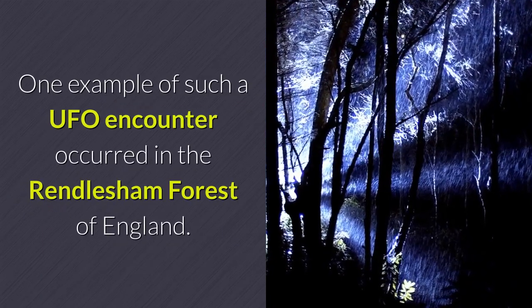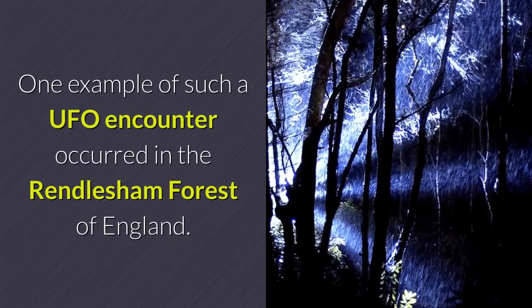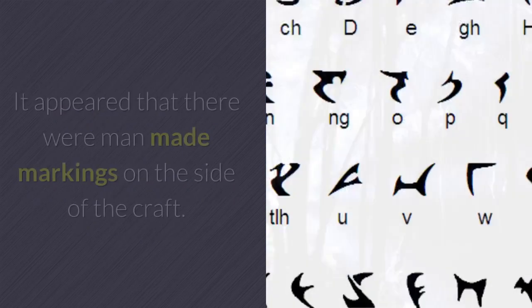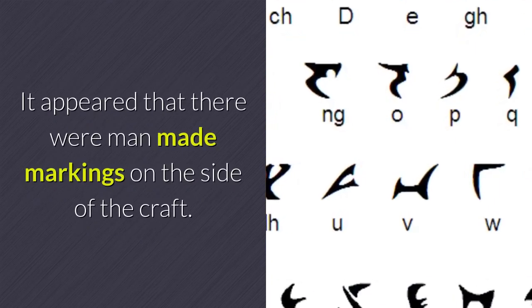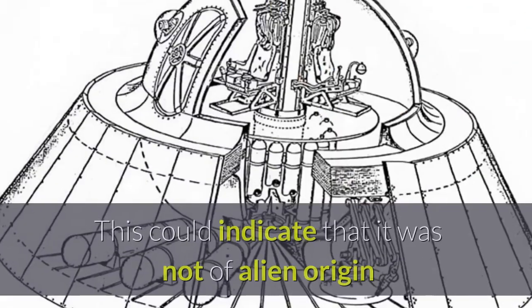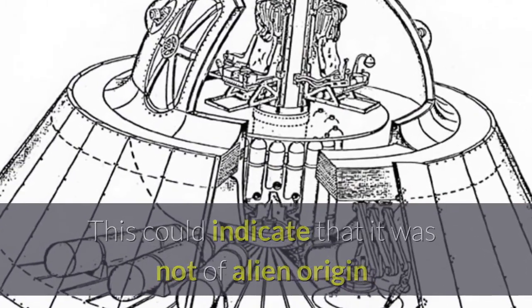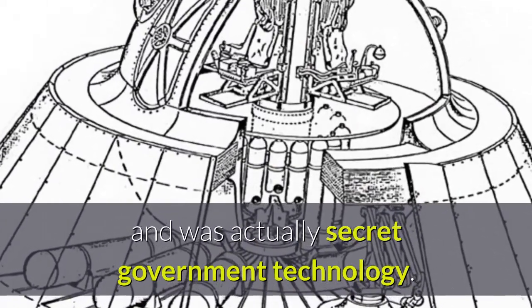One example of such a UFO encounter occurred in the Rendlesham Forest of England. It appeared that there were man-made markings on the side of the craft. This could indicate that it was not of alien origin and was actually secret government technology.